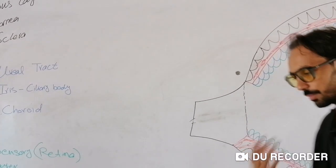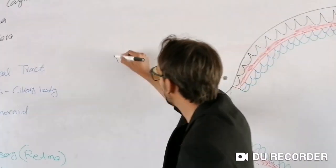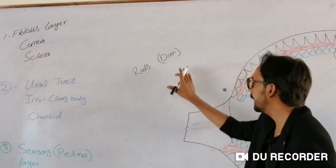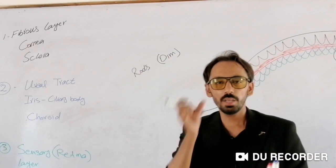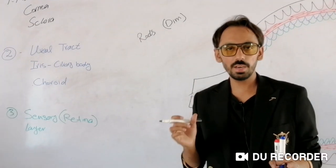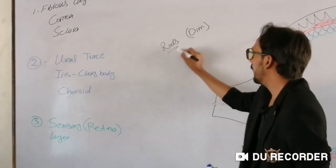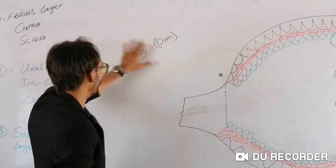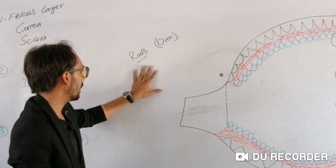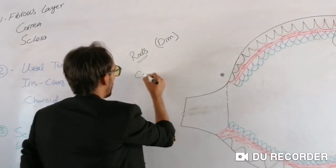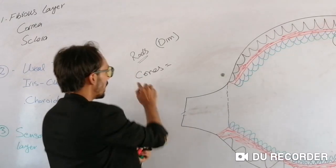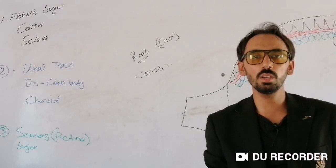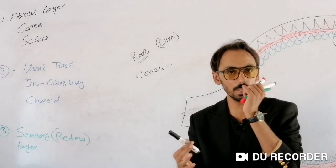The rods are very helpful in dim light. If you are wandering in a dark street and can see things a little clearly, the photoreceptors responsible for that are the rods. The cones are the photoreceptor cells helpful in daylight. With the help of cones, we can differentiate different colors.